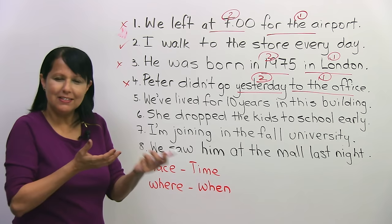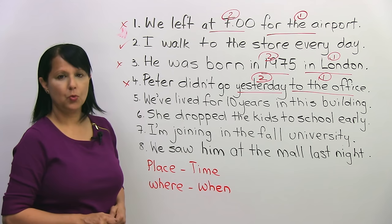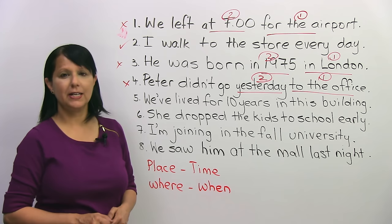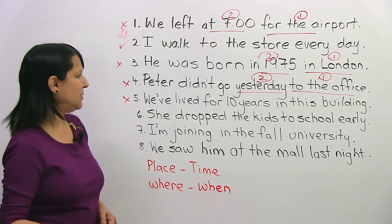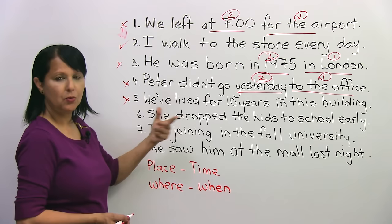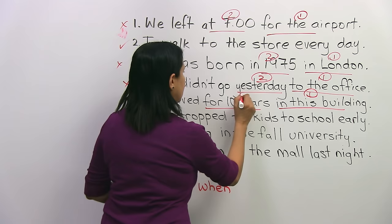Number five: 'We've lived for 10 years in this building.' Is that correct or incorrect? It is incorrect. We should say: we've lived where? In this building. When? For 10 years. So the correct version is: 'We've lived in this building for 10 years.'